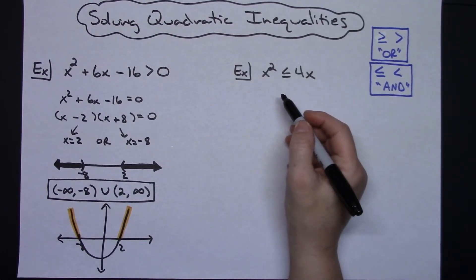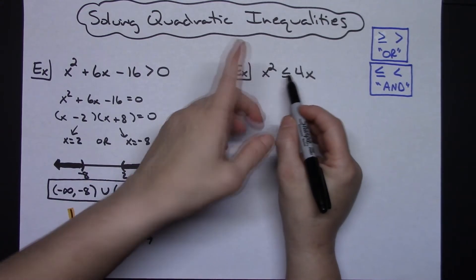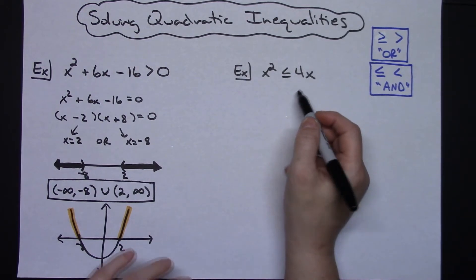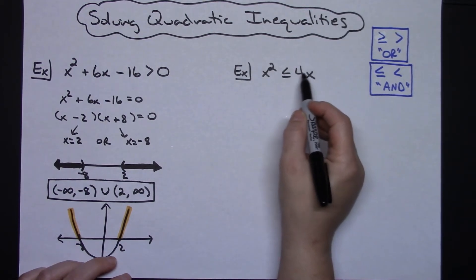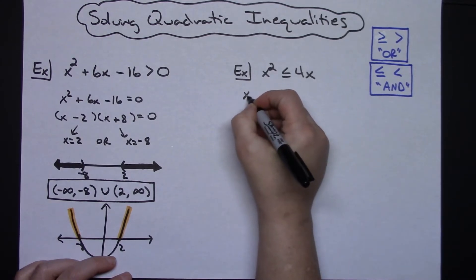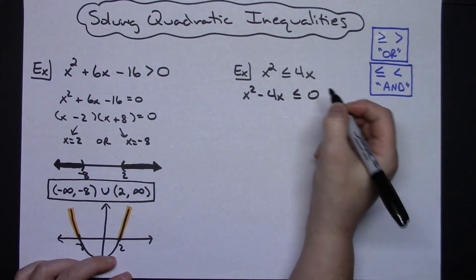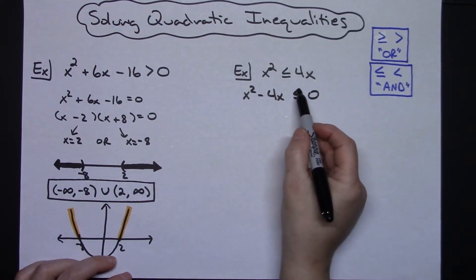Now let's come over here to the second example: x² ≤ 4x. First thing you need to do here before you start solving anything is I would suggest moving everything to the left. You want this to have a 0 on the right hand side. So I'm going to subtract 4x from both sides: x² - 4x ≤ 0. Looking at this inequality, less than or equal to, I know it's going to be an AND inequality.